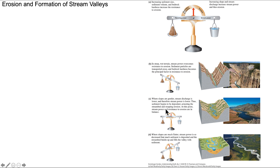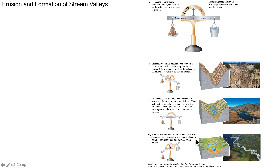Where slopes are more gentle and stream discharge is lower, stream power is going to be lower. Sediment begins to be deposited as streams meander through the valley, and ultimately the stream bed gets coated with enough heavy material that it's protected from further vertical erosion. At that point, stream power and resistance to erosion are in balance. Where slopes are much lower, stream power is also much lower and sediment is deposited such that the stream bed builds up and fills the valley.